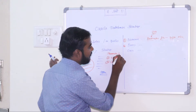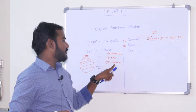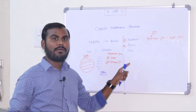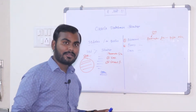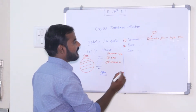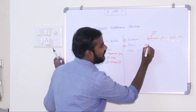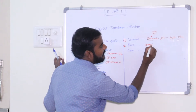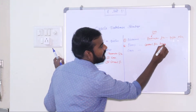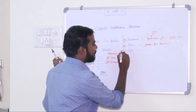Once the database gets the location of the control file from the parameter file, it will go and check whether the control file exists at that location. If it is available, the database will go into the Mount state. So in the Mount stage, the control file location is verified.